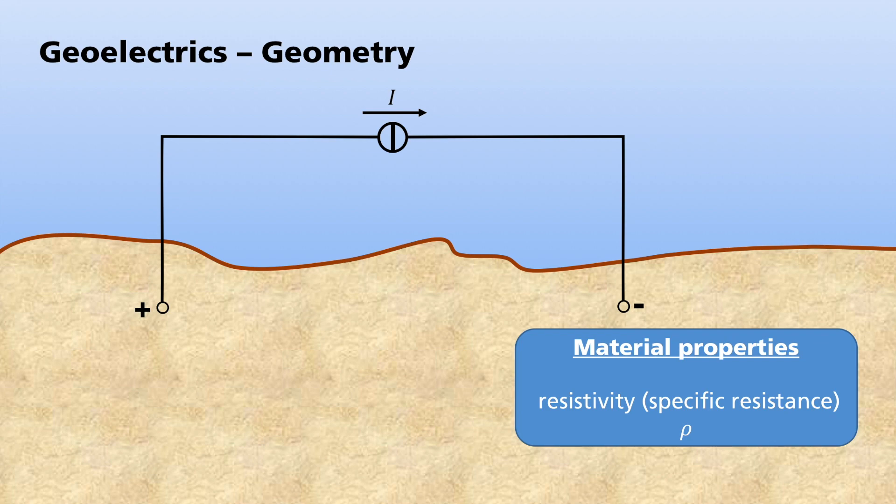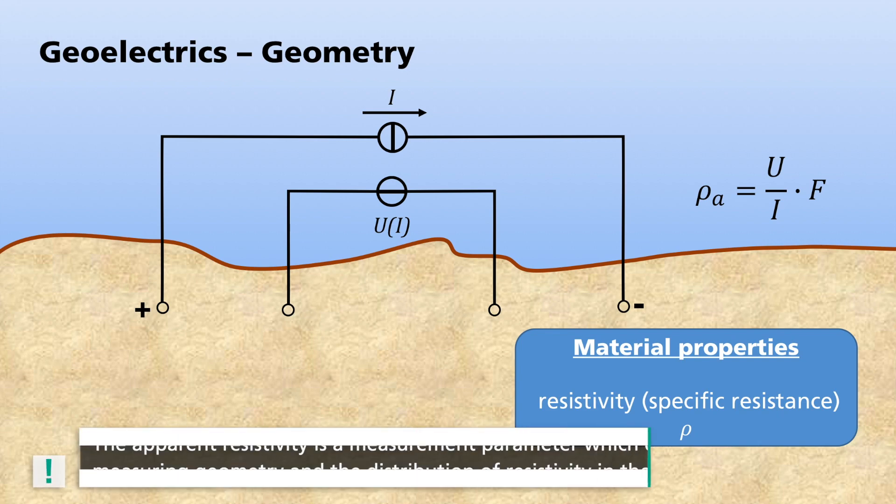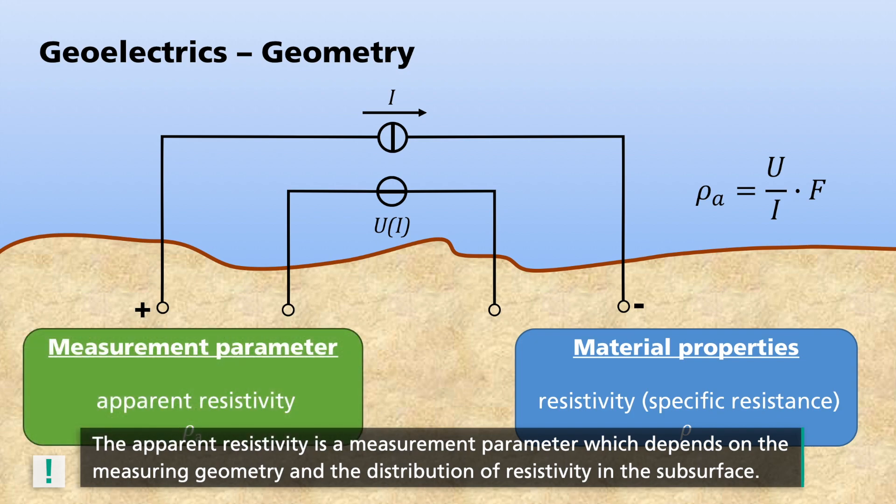As such, a four-pole measuring geometry is typically used for the experimental setup. Between the two electrodes for supplying the current, two more probes are inserted. By using them, the electrical potential difference at the surface can be measured. And by doing this, the voltage drop at the current supplying electrodes is not measured. The ratio of the measured potential difference U to the supplied current I multiplied by a geometry factor F gives the apparent resistivity rho A of the materials through which the current flows. This apparent resistivity is ultimately the parameter which geoelectrics measures. It depends on the measuring geometry and the distribution of the resistivity in the subsurface.